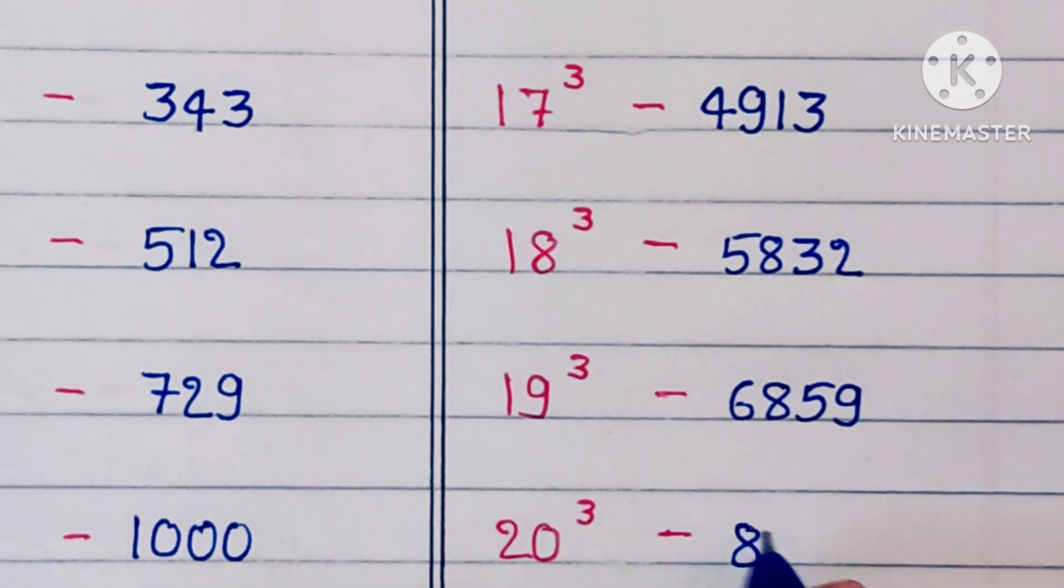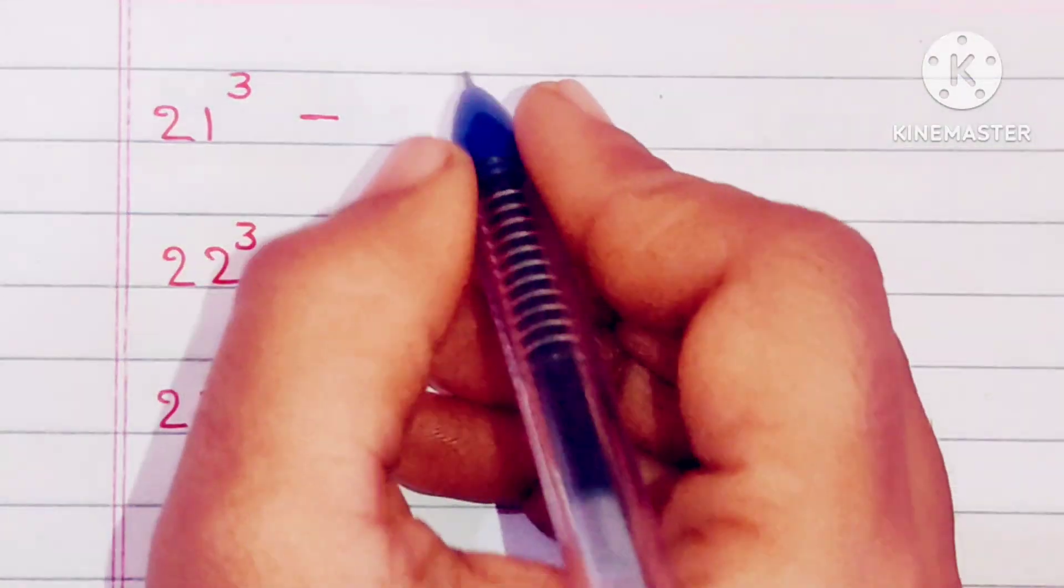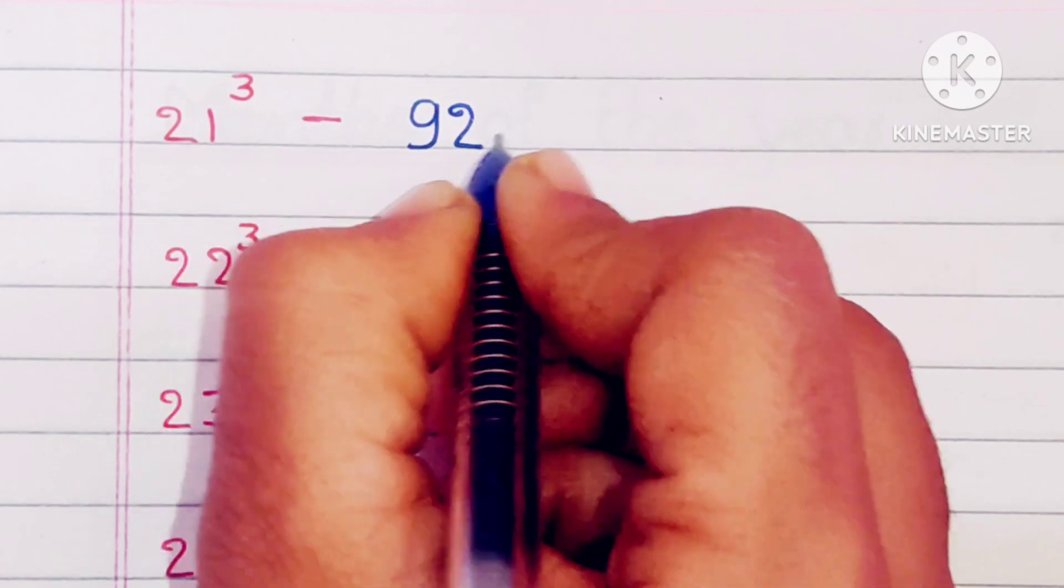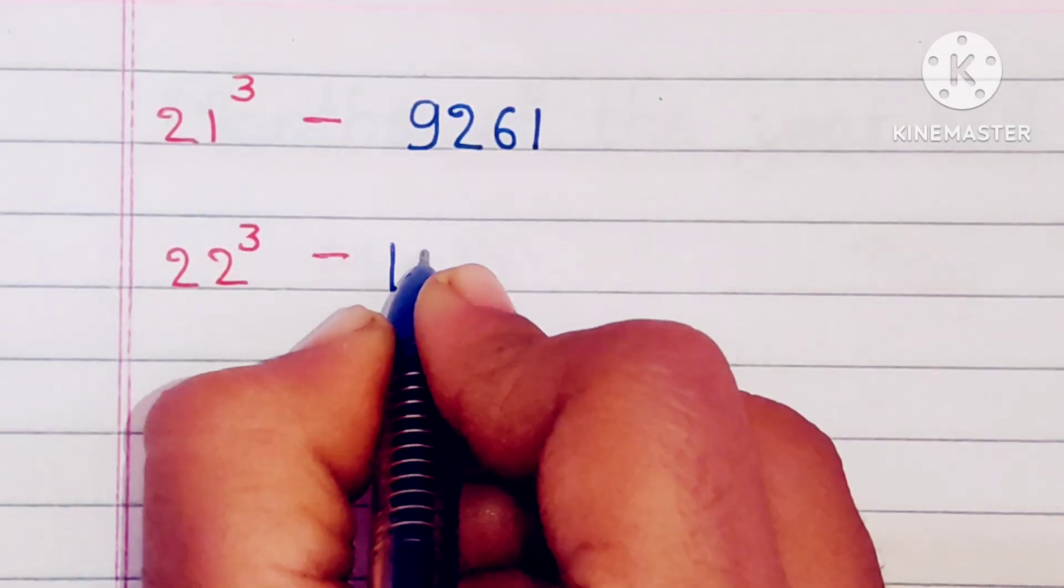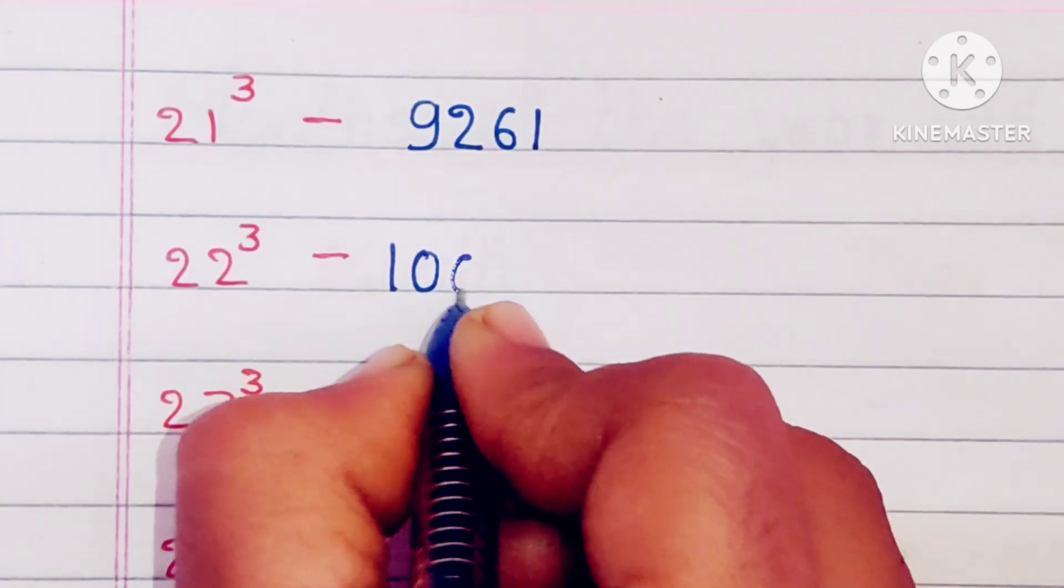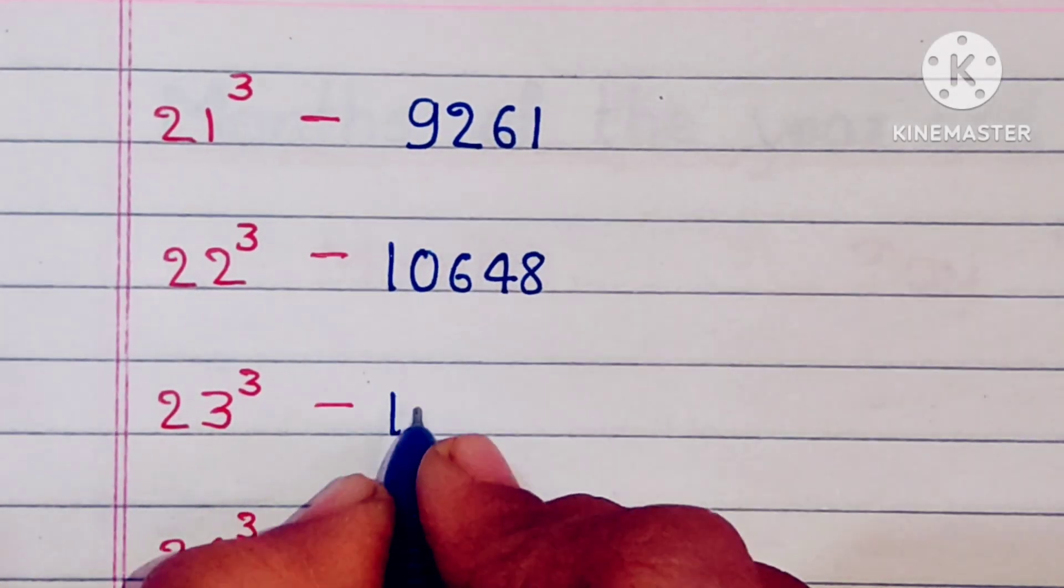20 cube is 8000, 21 cube is 9261, 22 cube is 10648.